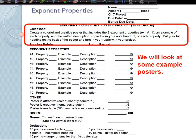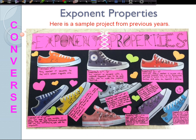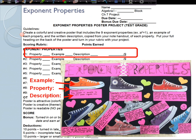We're going to look at some example posters. Here's an example project from previous years. Notice that they have their own example that they've created, the property written out, and the description of the property from their handout sheet. For each one of the properties, they have their own example, the property, and the description from their notes handout. Their theme is shoes.